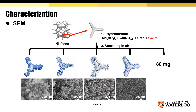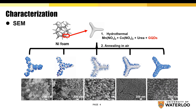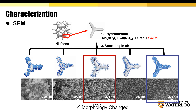SEM images of the product show the resulting particles' morphology changes based on the GQDs amount. The nano-needle shape material is supposed to have the highest surface area, while the 80 GQDs sample has the most GQDs — so which performs better?